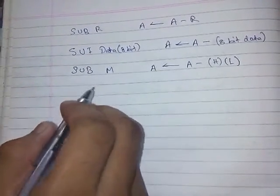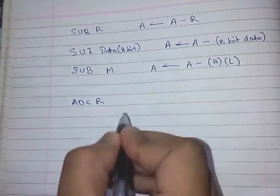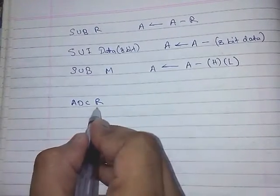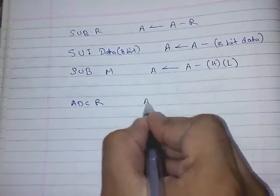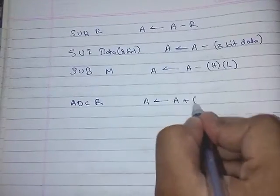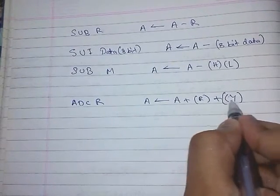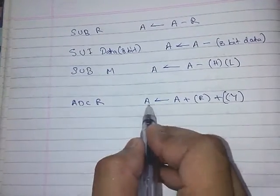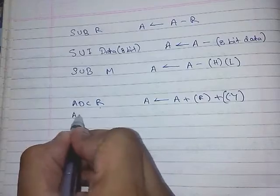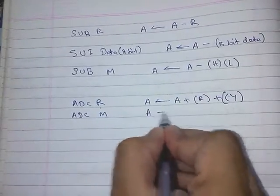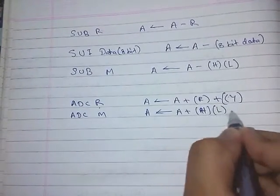Along with addition and subtraction, there is also ADC R — add the content of register R with the accumulator including carry. So this will be: A = A + R + carry. If carry contains 0 or 1, that will be added with the accumulator. For memory: ADC M, so A = A + [HL] + carry.